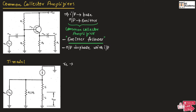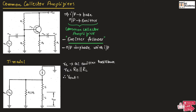Re is the AC emitter resistance and it can be given as Re = capital RE parallel with capital RL. The output voltage can be given as V = I × R. The current which is flowing in this branch will be IE. Therefore, we can write: V_out = IE × Re. Let us take this as equation number one.